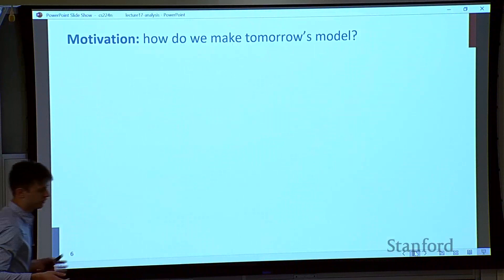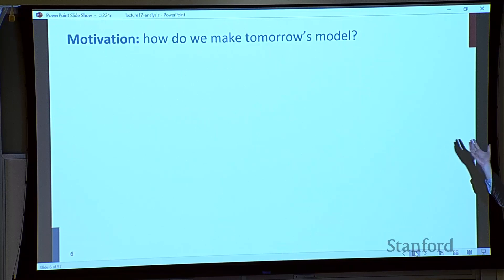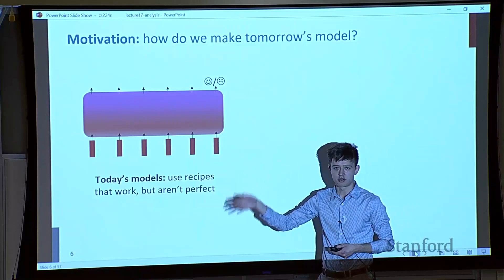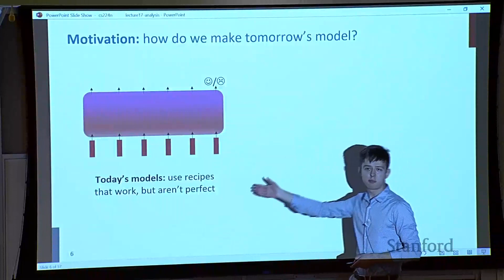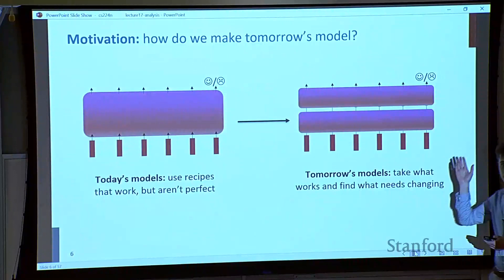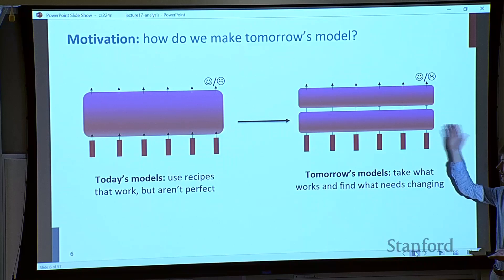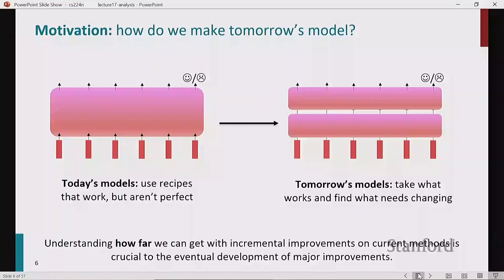Another motivation is to make tomorrow's model. When you're building models — in this class or at a company — you start with some recipe that is known to work. It's not perfect; it makes mistakes. You look at the errors, and over time you take what works and find what needs changing. Maybe adding another layer helped and model performance gets better. Incremental progress is actually very important — it helps us evaluate when we need big leaps versus when incremental progress isn't getting us far.